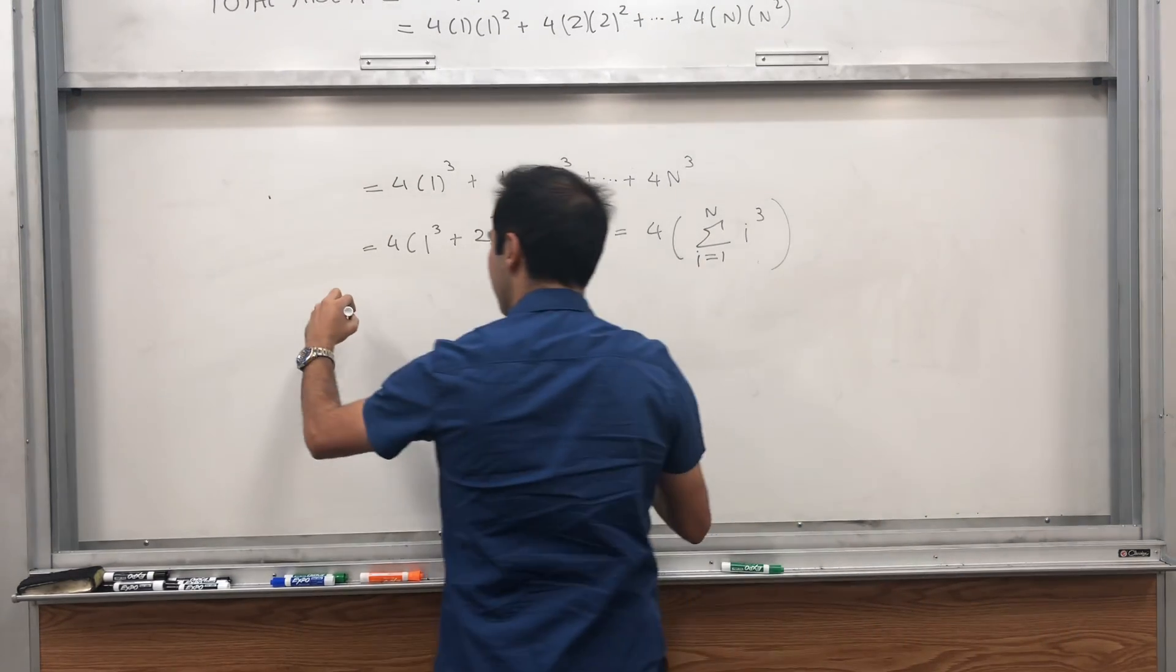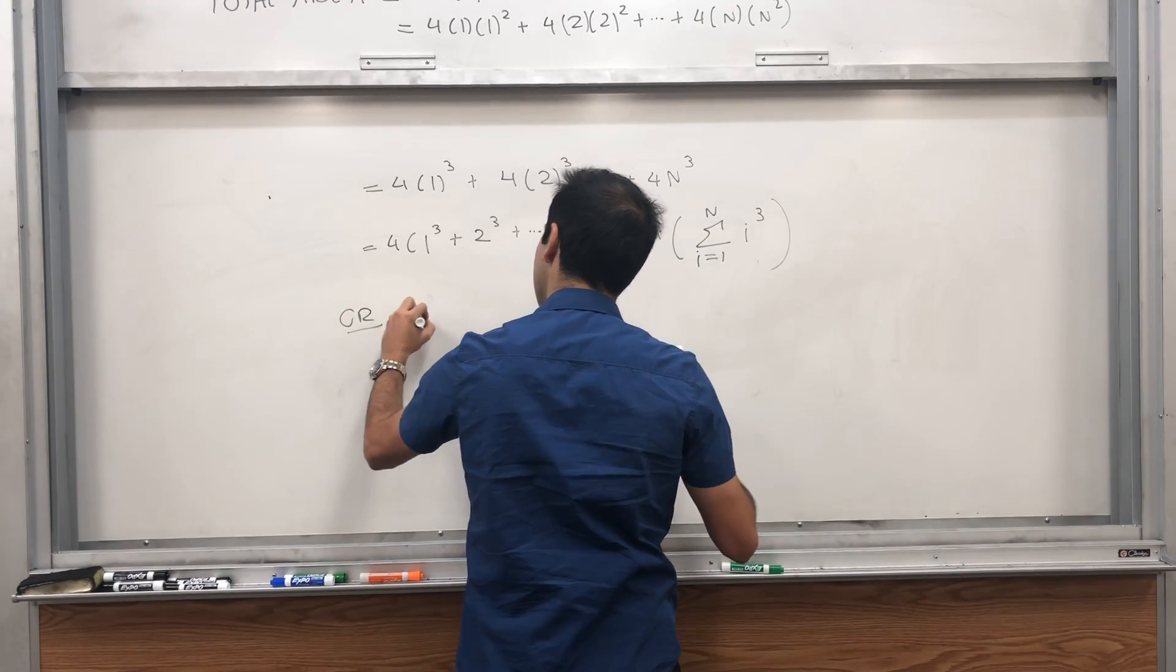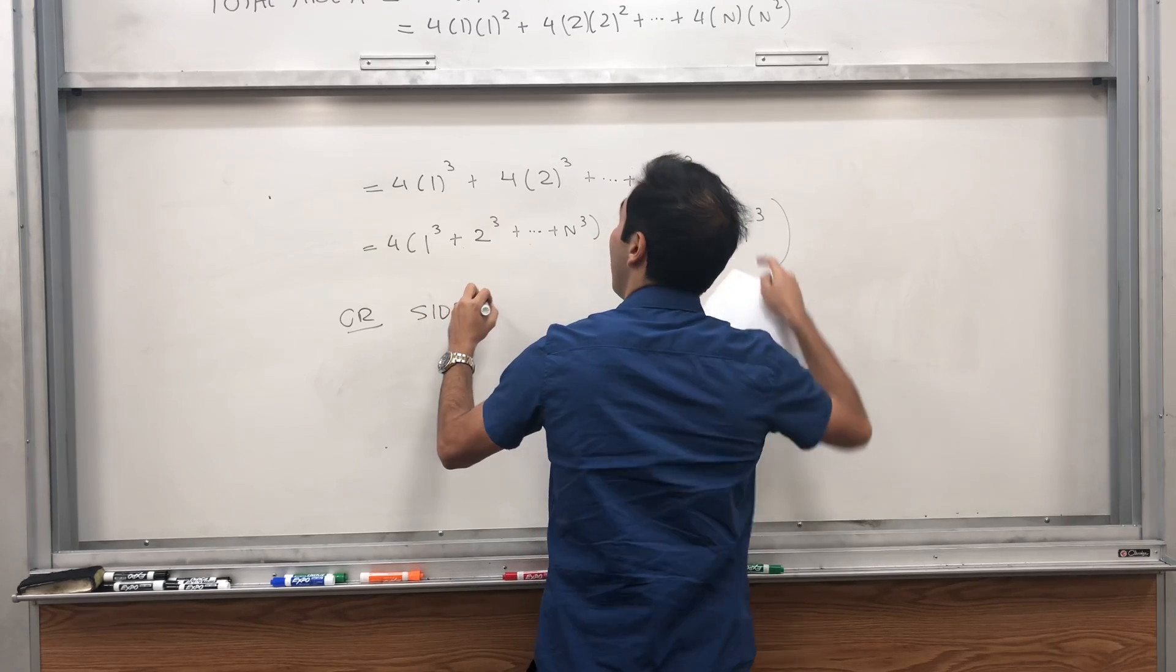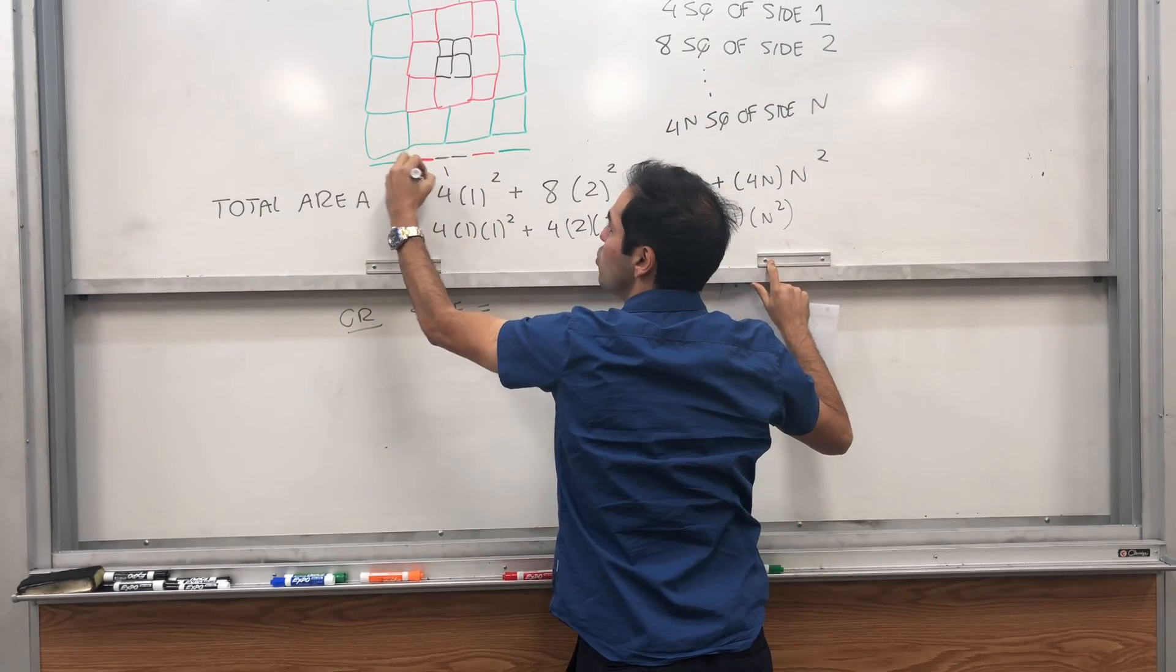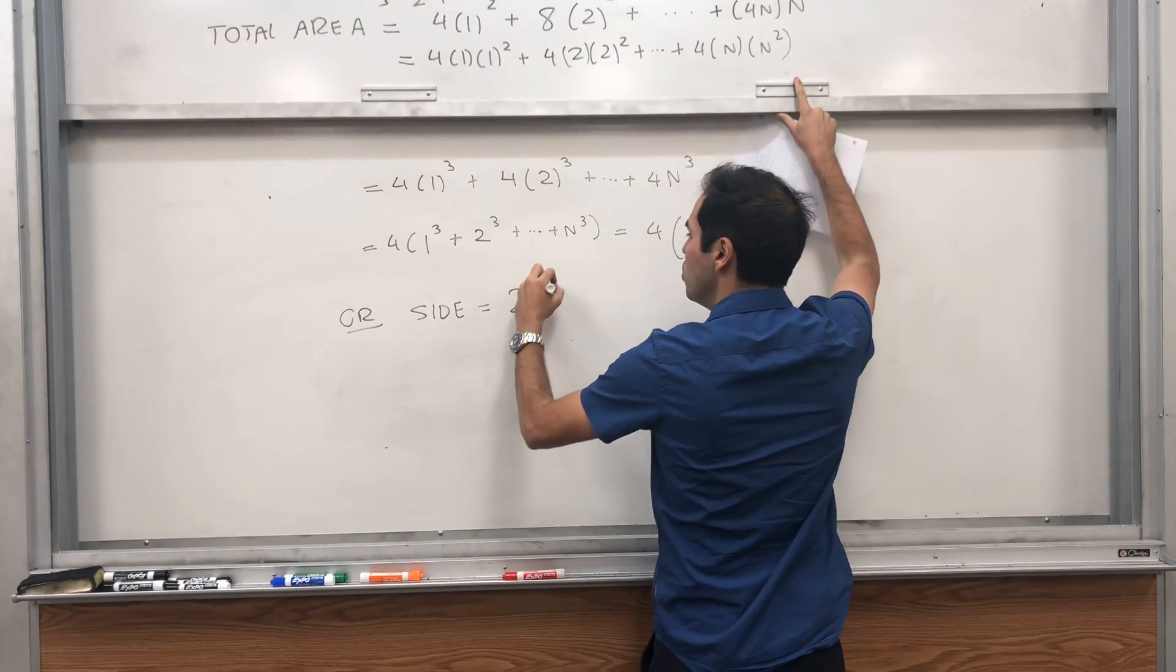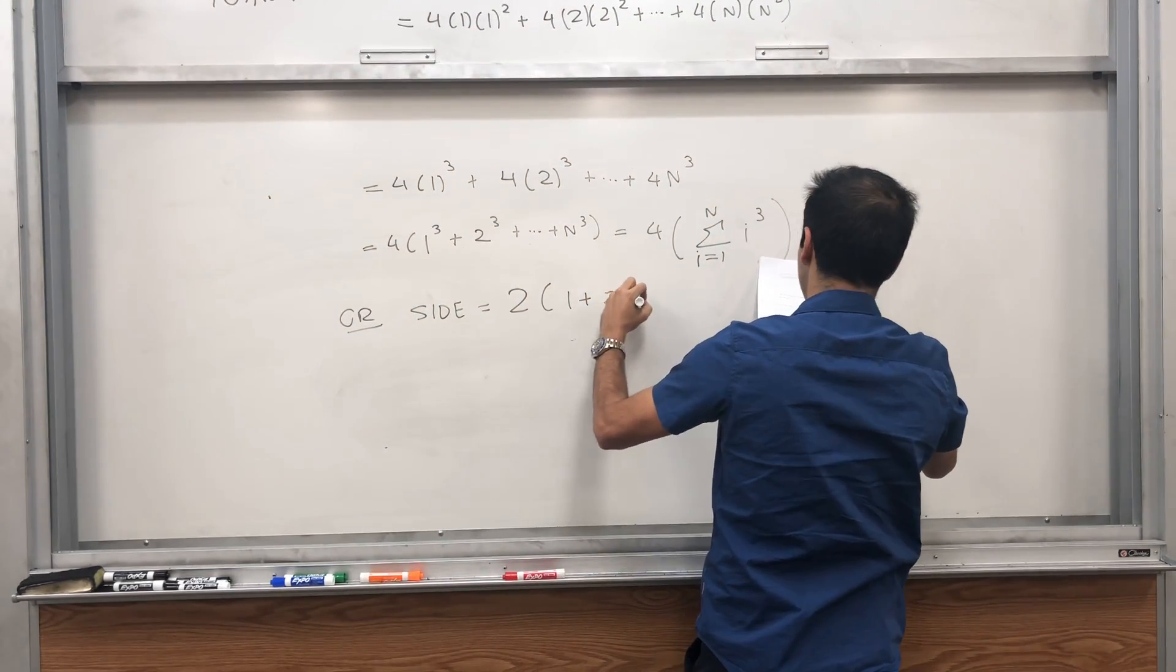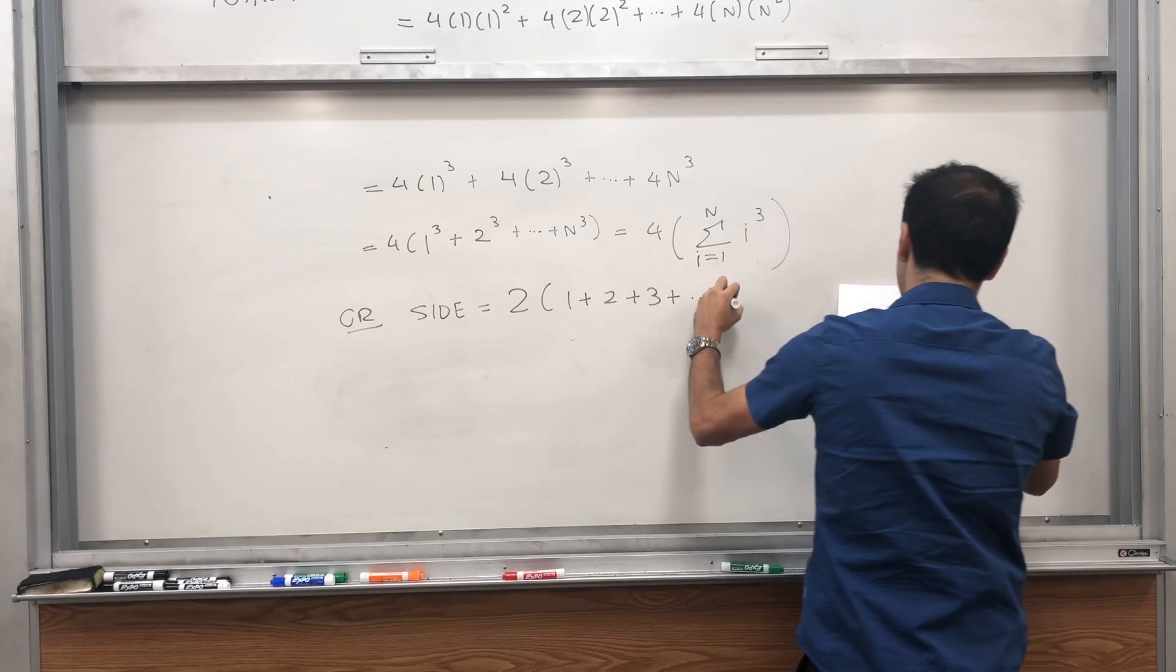You can say the side is 1 plus 2 plus 3, and we double that. So 2 times 1 plus 2 plus 3, up to n.